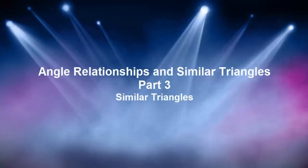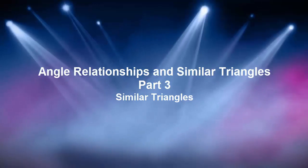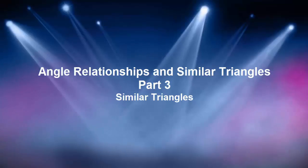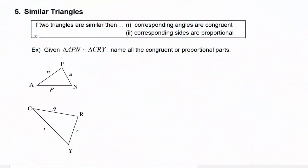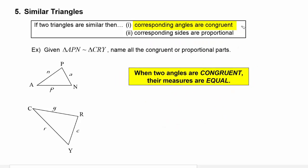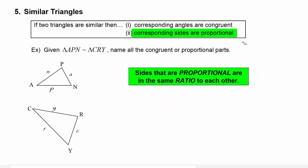In part three of our lesson on angle relationships and similar triangles, we're going to focus on the study of similar triangles. When two triangles are similar, two results become true: corresponding angles are congruent, meaning their measures are equal to each other, and secondly the corresponding sides are proportional to each other, which means they'll be in the same ratio.